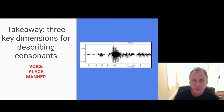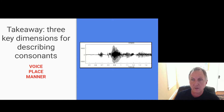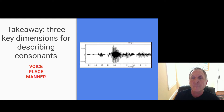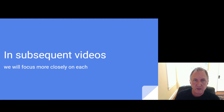The takeaway: there are three key dimensions for describing consonants. We need to know what's happening at the vocal cords — are they vibrating or not? We need to know where a constriction is made — at the two lips, at the lips and teeth, or somewhere else. And we need to know the manner of articulation — does the sound allow air to keep escaping, or does it block air completely? In subsequent videos we'll focus more closely on each and learn specific terms to describe places and manners of articulation.